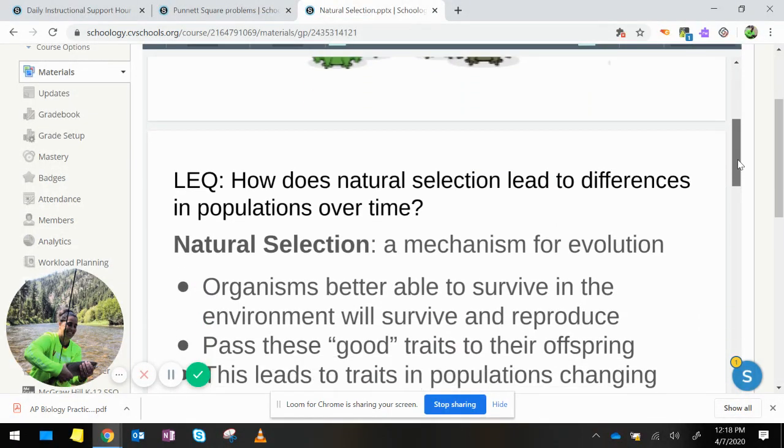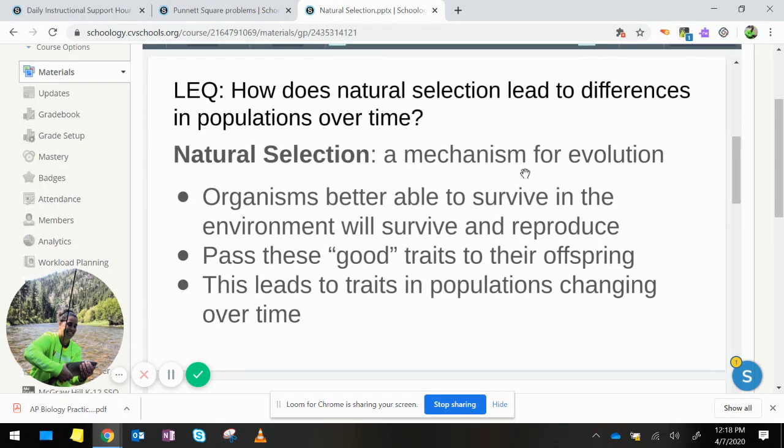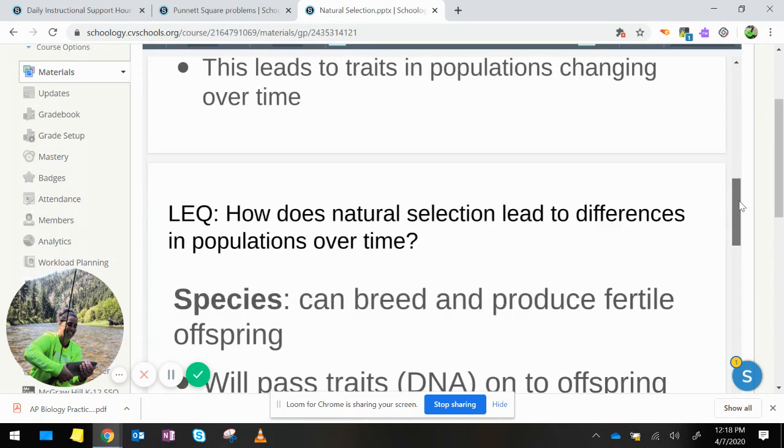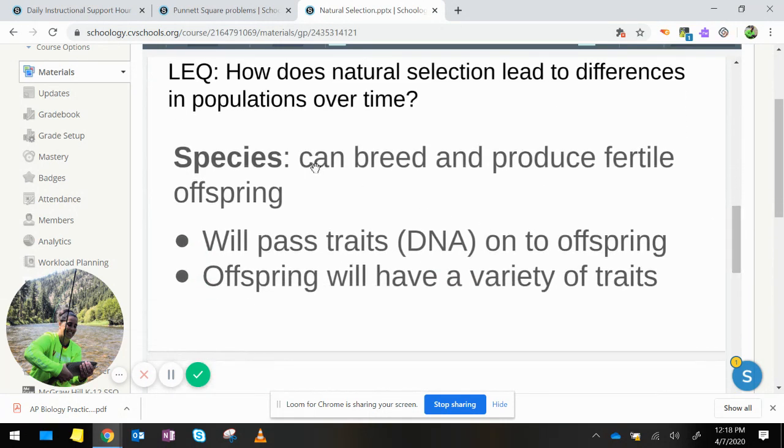We talked about natural selection as a mechanism for evolution. Organisms better able to survive in the environment will reproduce because they've survived long enough to be mature enough to reproduce. They can pass these good traits on, and this leads to traits in the population changing over time.